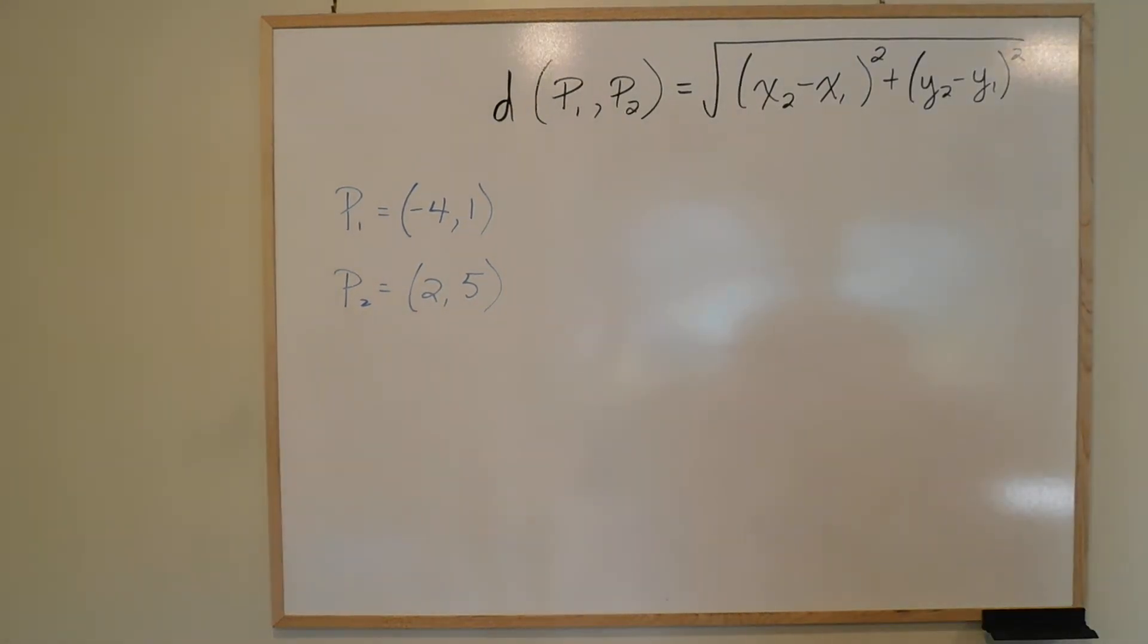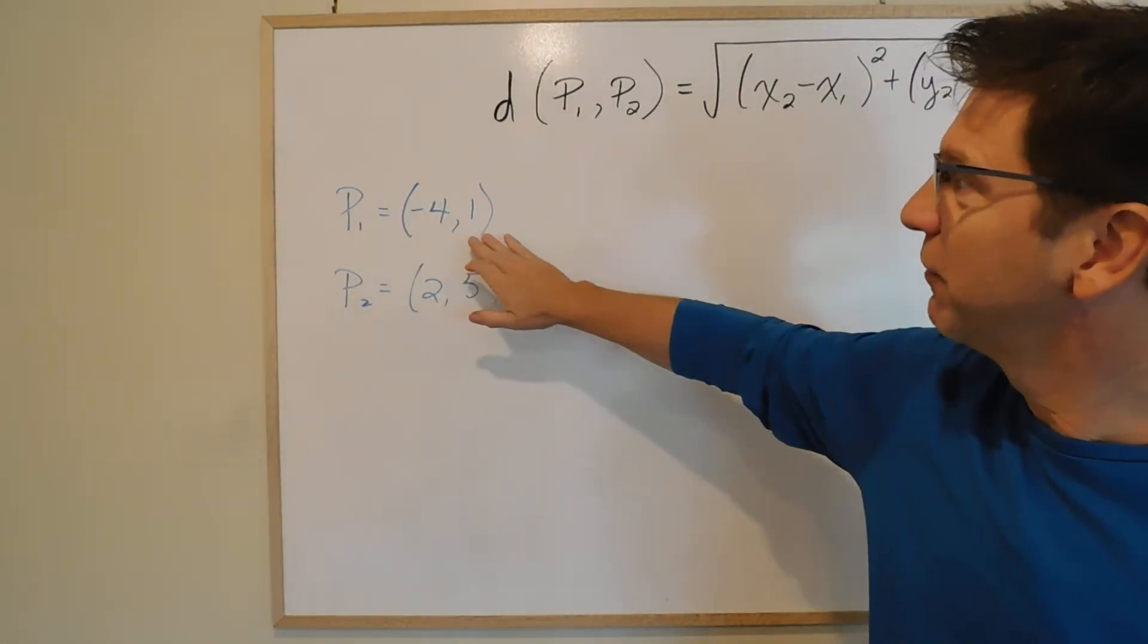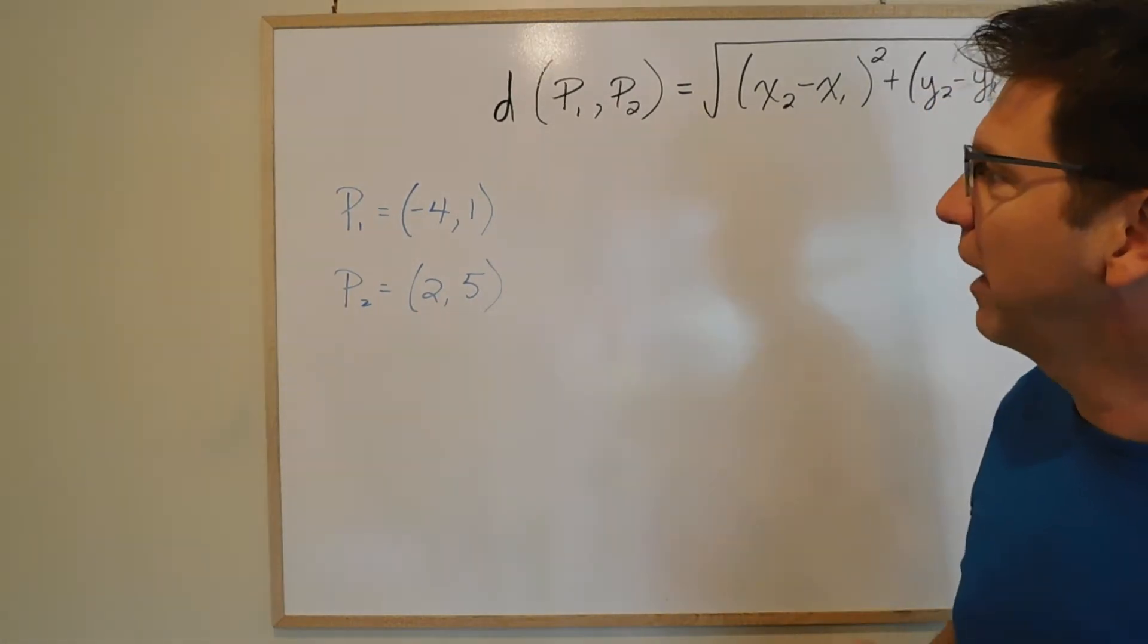Alright, let's look at this distance question as well. It has the points in it, negative 4 and 1, and it has the point 2 and 5.